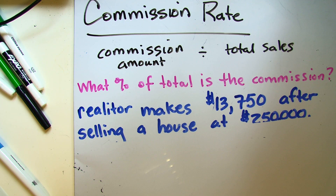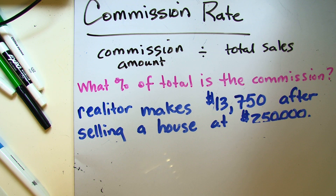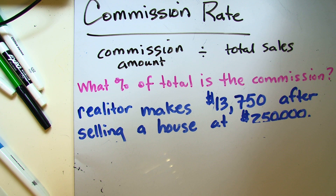Now let's talk about calculating the rate of commission. An easy formula to remember is dividing the commission amount by the total sale amount. However, if this formula doesn't make much sense, what you could do is create a word sentence and then translate it into an equation and then solve. So my question could be: what percent of a total amount is the commission amount?